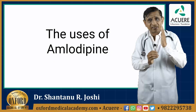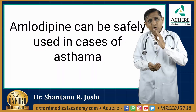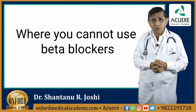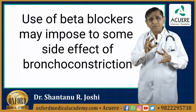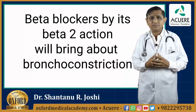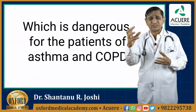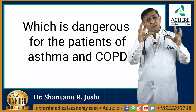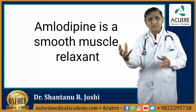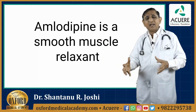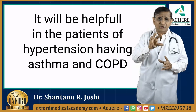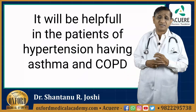Now, dear students, we will see the uses of Amlodipine. Amlodipine can be safely used in cases of asthma where you cannot use beta blockers, as beta blockers by their beta-2 action cause bronchoconstriction, which is dangerous for patients of asthma and COPD. Amlodipine, being a smooth muscle relaxant, will dilate the bronchus and dilate the peripheral vascular bed, making it helpful in hypertensive patients with asthma and COPD.